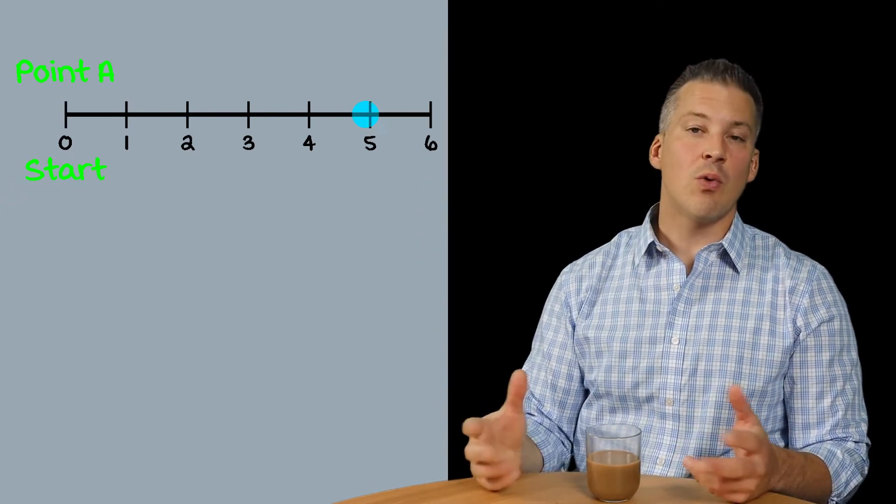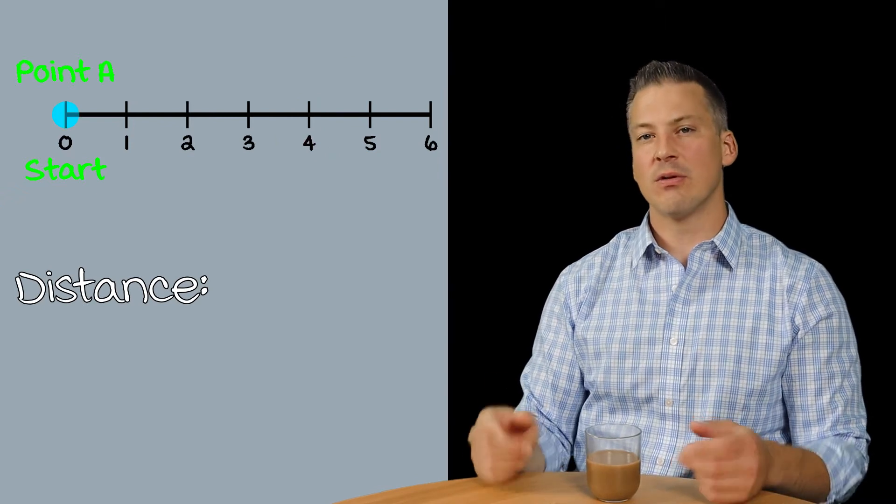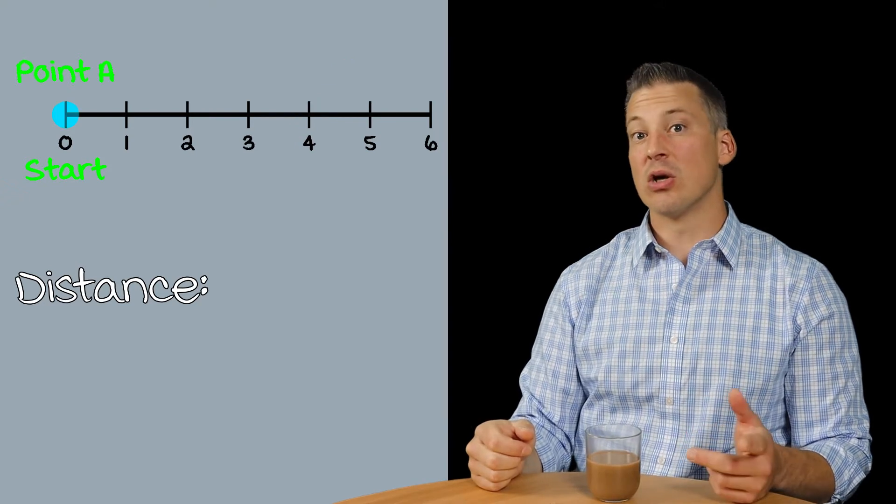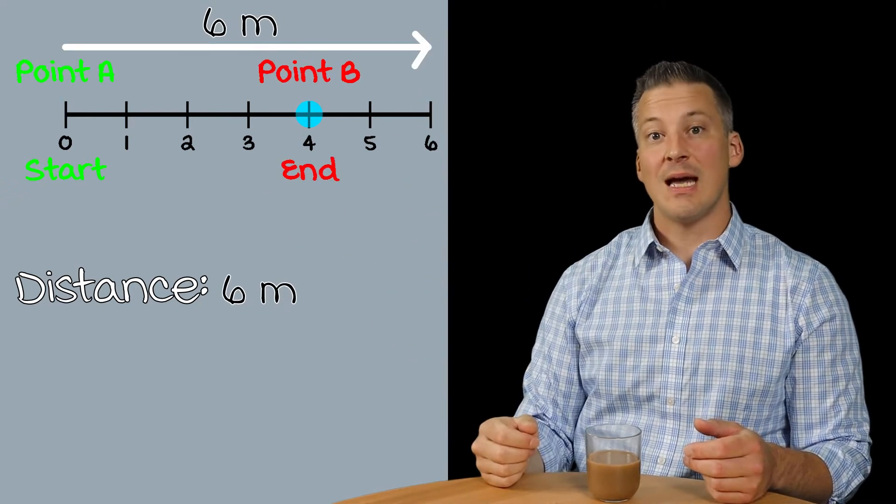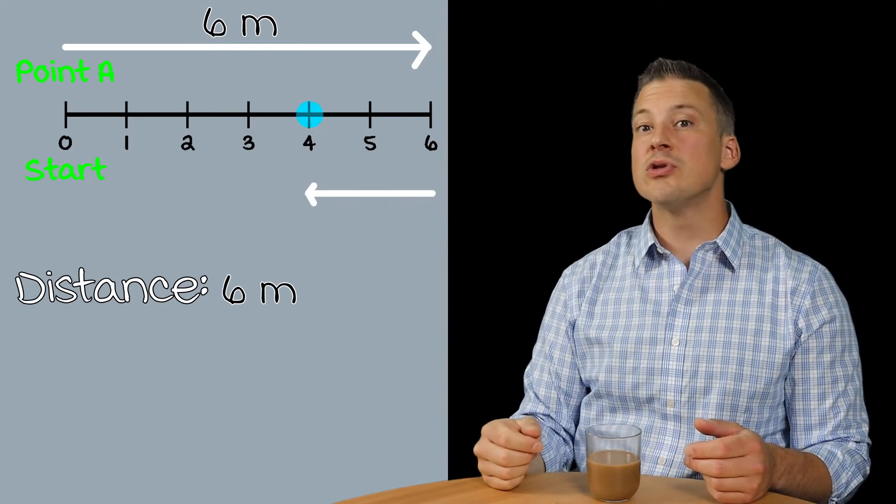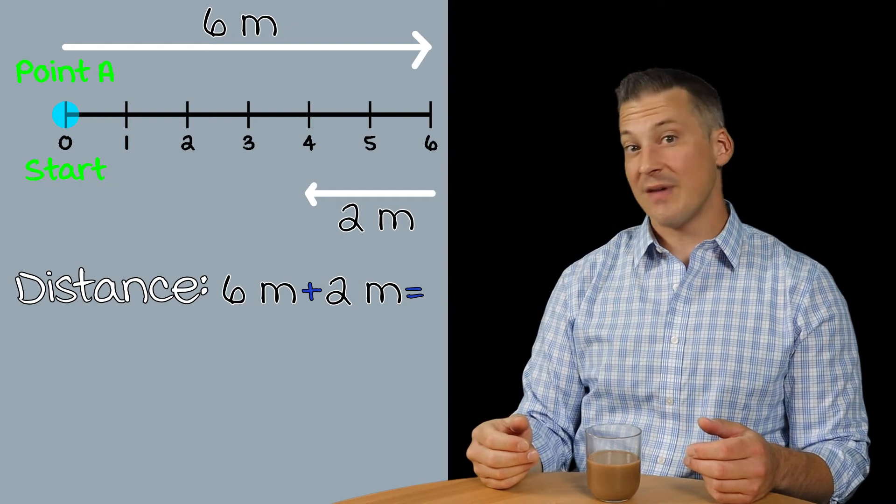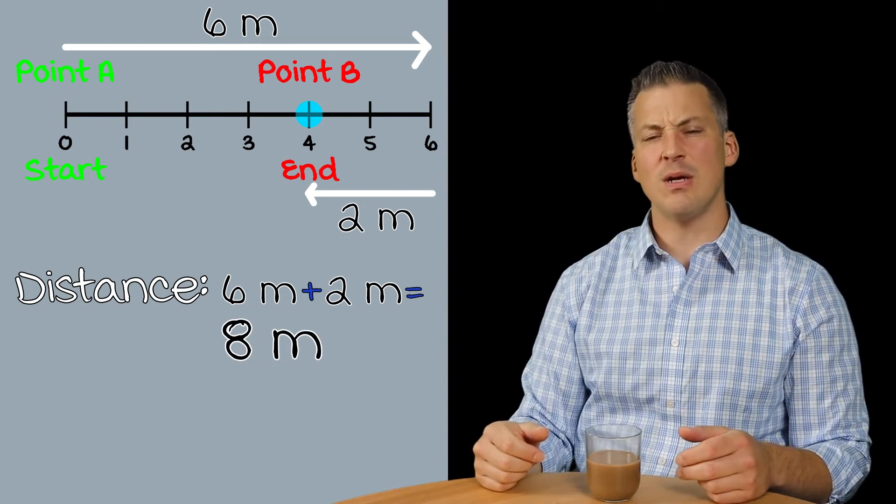Now the question is, what is the distance that ball has traveled? Remember, distance is the actual length of ground covered by a moving object. So it looks to me like the ball moves six meters, and then it goes back and covers another two meters. So that's a total of eight meters. So we would say that the distance that that ball traveled is eight meters.